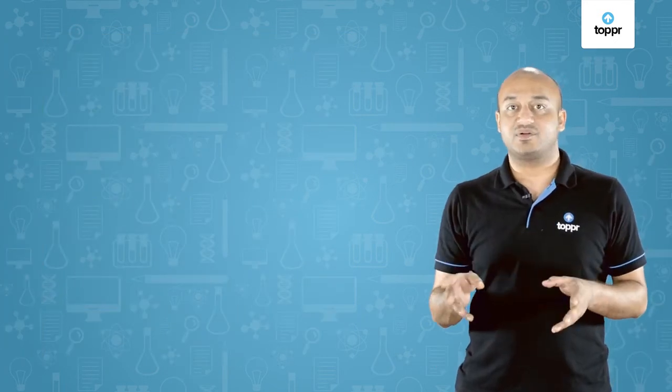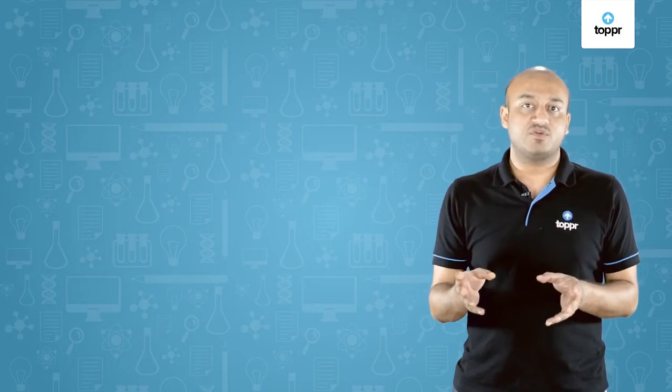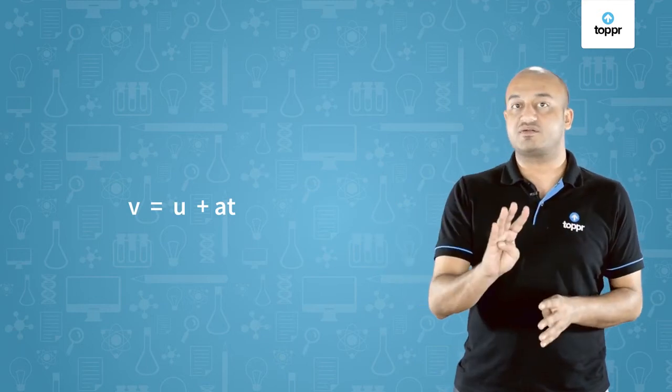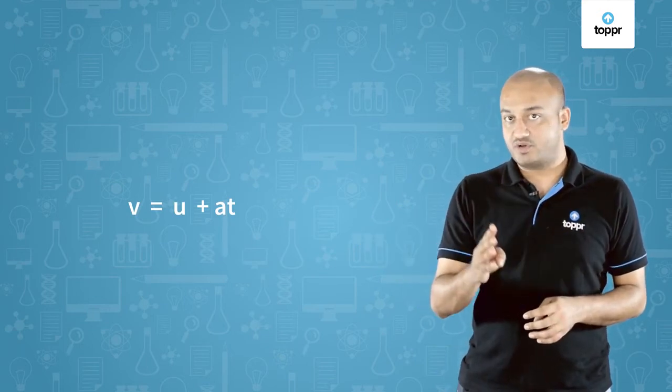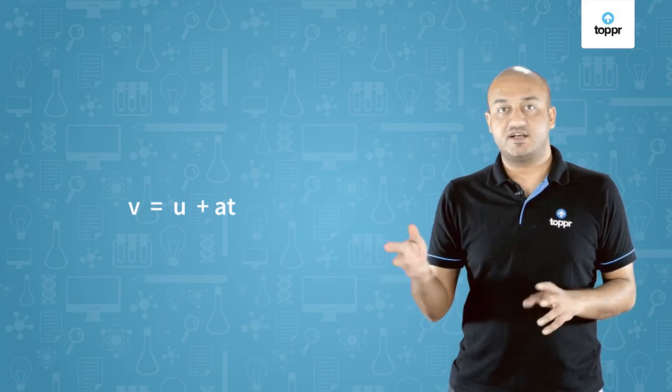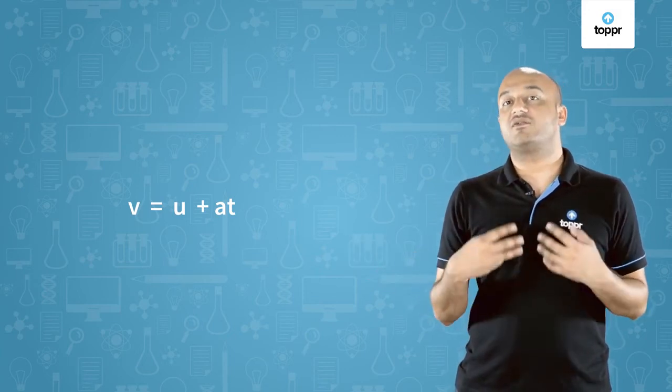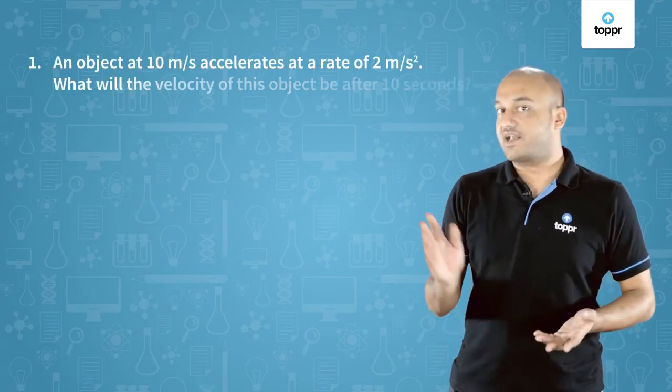Now let's look at an example. Whenever you're solving problems with the first equation of motion, v = u + at, we are dealing with four parameters: v, u, a and t. Typically in the questions you'll be given three out of these four parameters and you'll be expected to find out the fourth parameter, just like in this question.